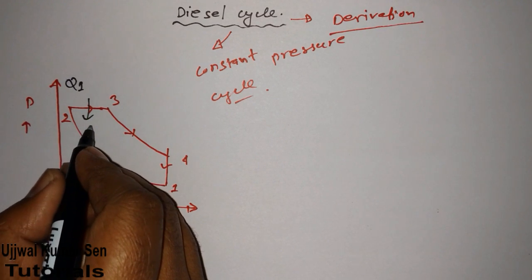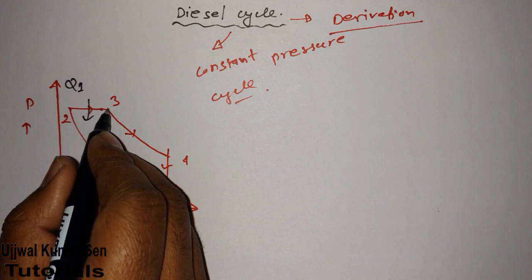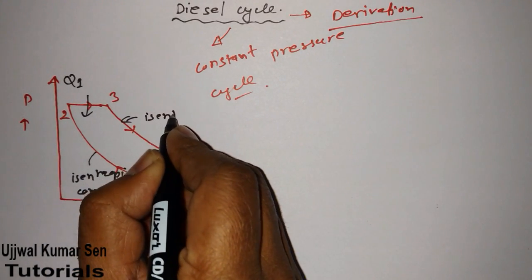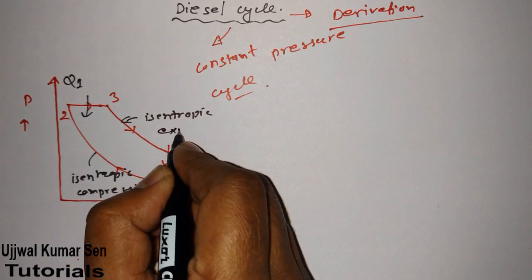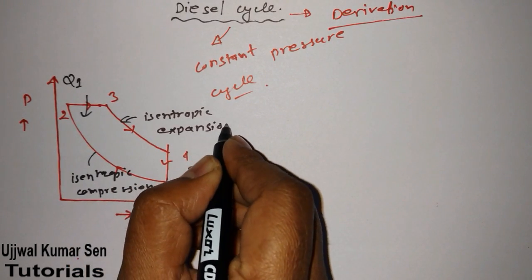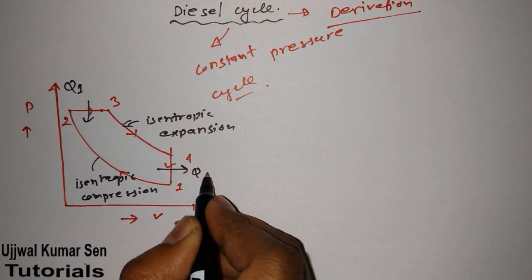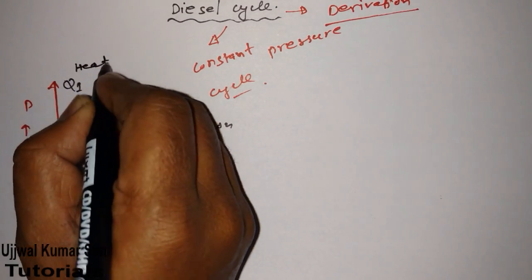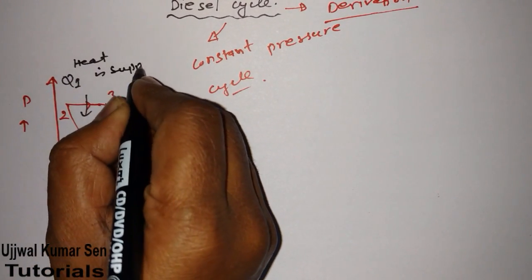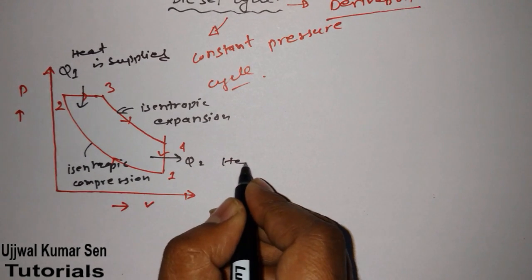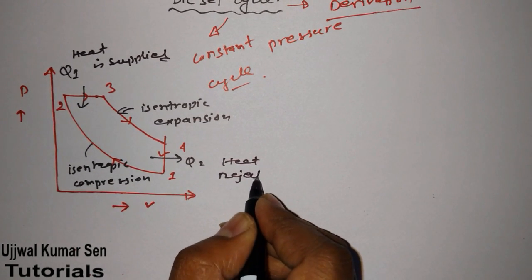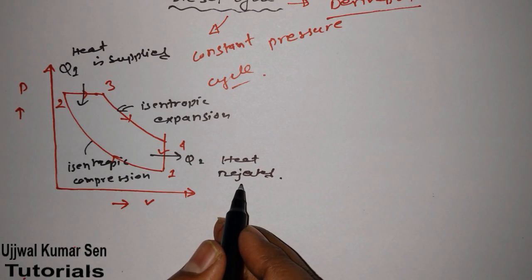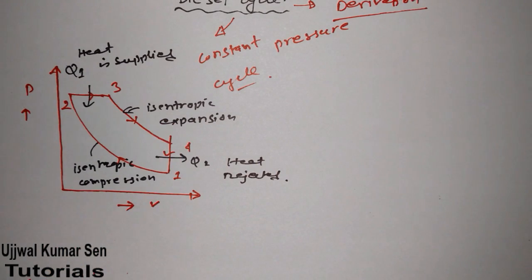Heat is supplied at process 2 to 3, which is Q1. Process 3 to 4 is known as isentropic expansion. Process 4 to 1 is where Q2 — heat rejection — occurs. Heat supplied minus heat rejected equals work done. This completes the PV diagram for the Diesel cycle.